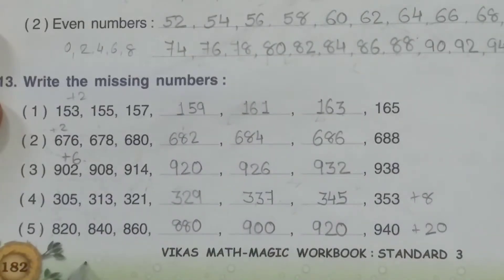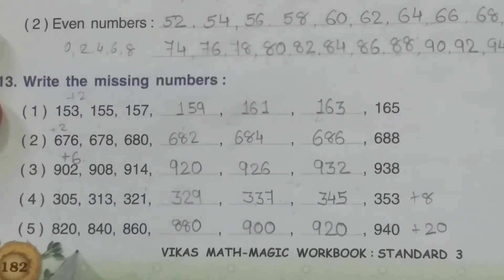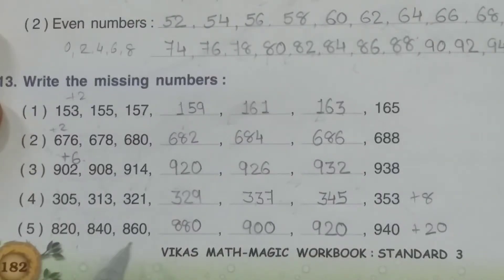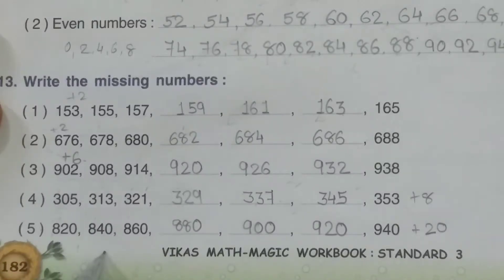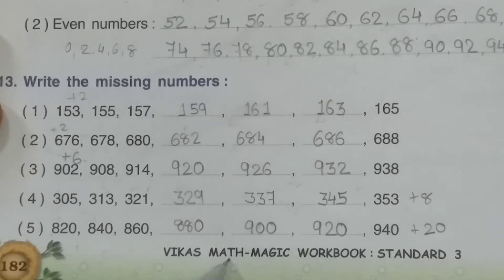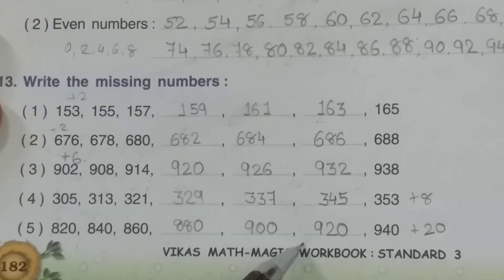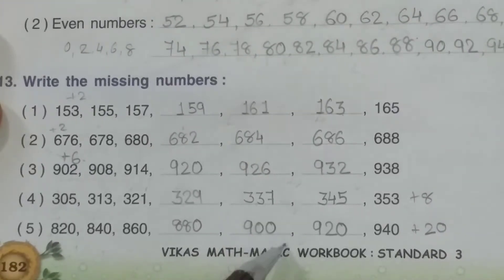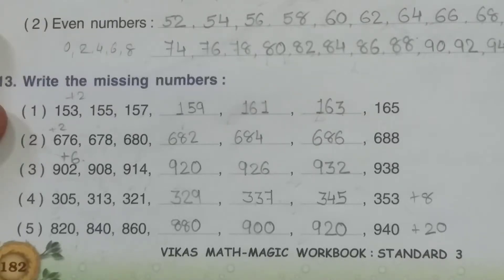Now see the fifth one: 820, 840, 860. Here also you can see the difference is 20, and numbers are increasing, so you have to do addition. 820 plus 20 = 840, plus 20 = 860, plus 20 = 880, plus 20 = 900, plus 20 = 920, plus 20 = 940.